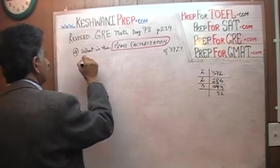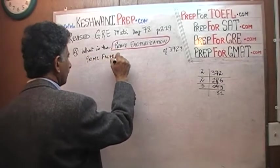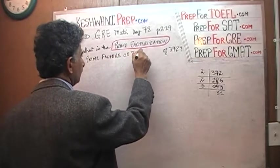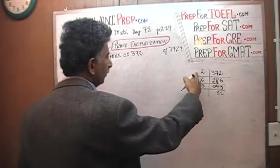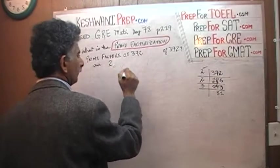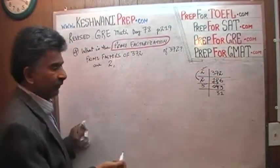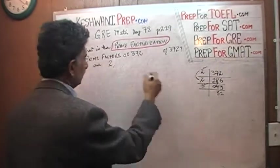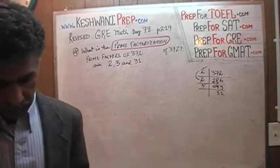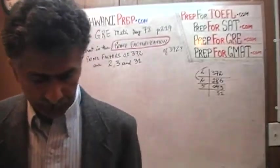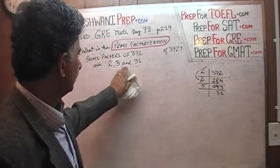That is it. So the prime factors of 372 are right there: 2, 3, we don't count the 2 again because it is being repeated. So the prime factors are 2, 3, and 31. That's it, we are done. 372, despite the fact that it is such a large number, has only 3 prime factors: 2, 3, and 31.